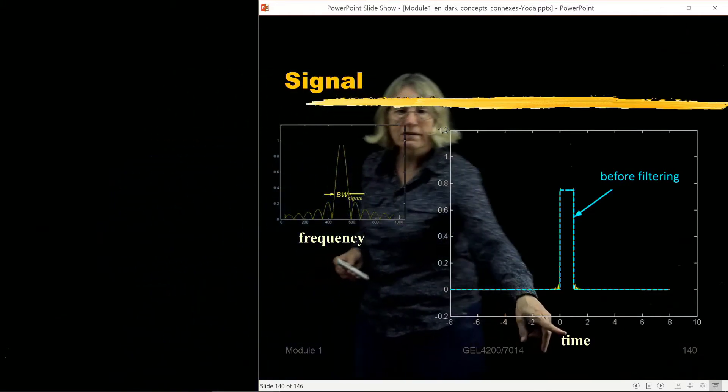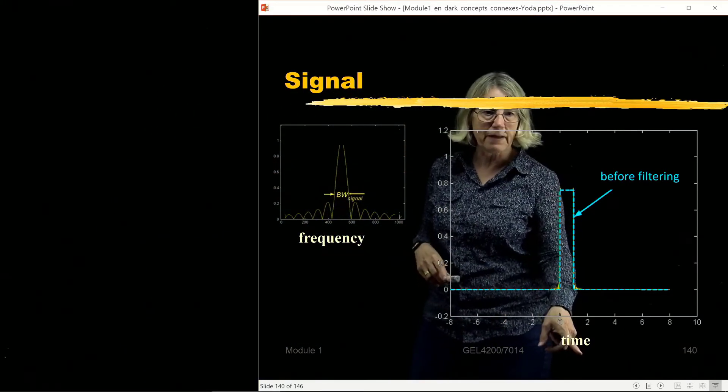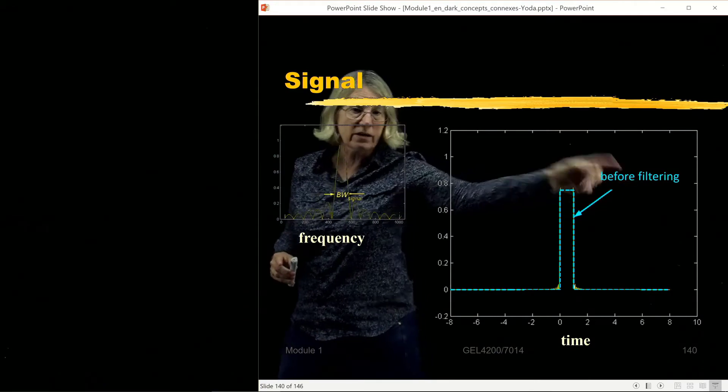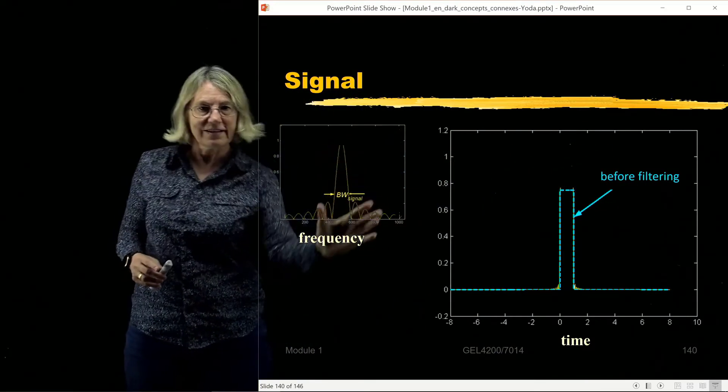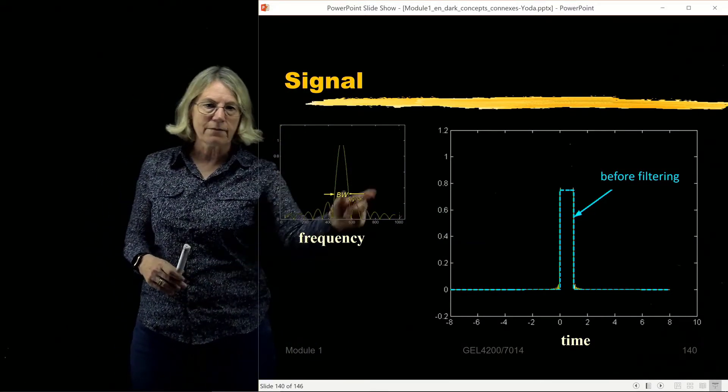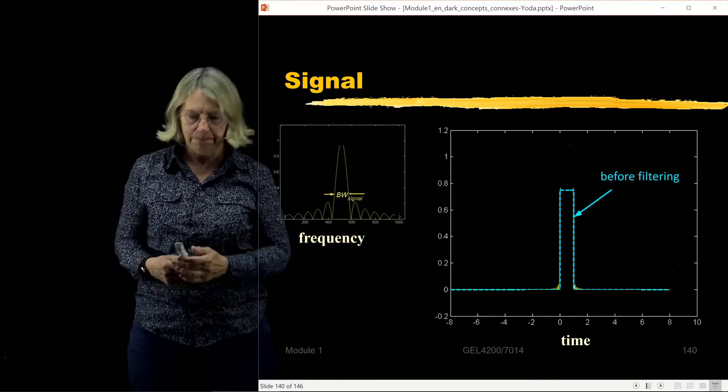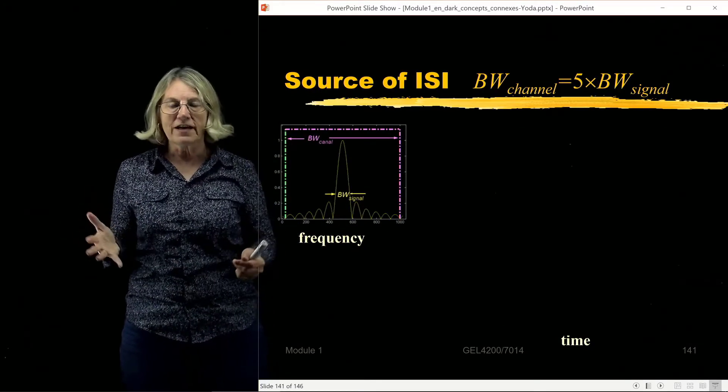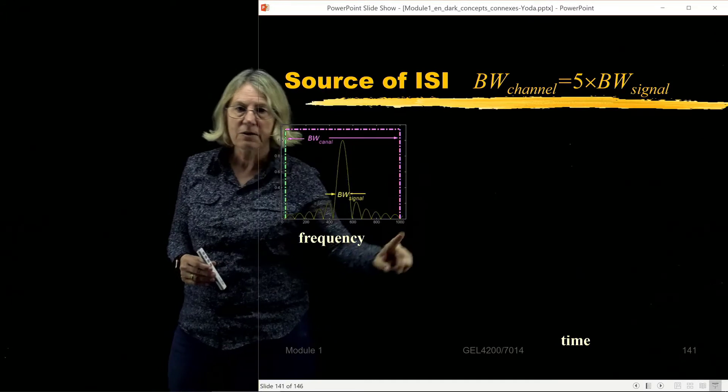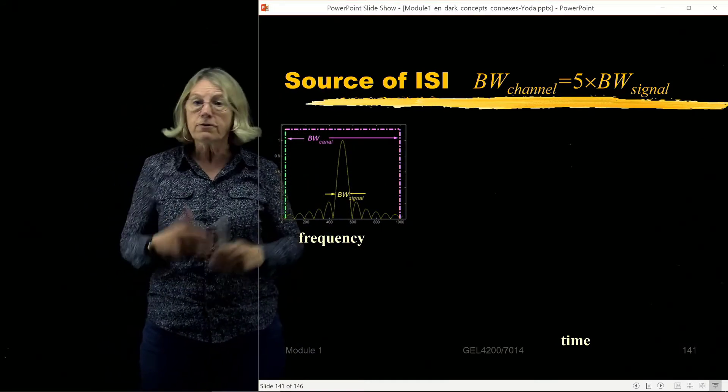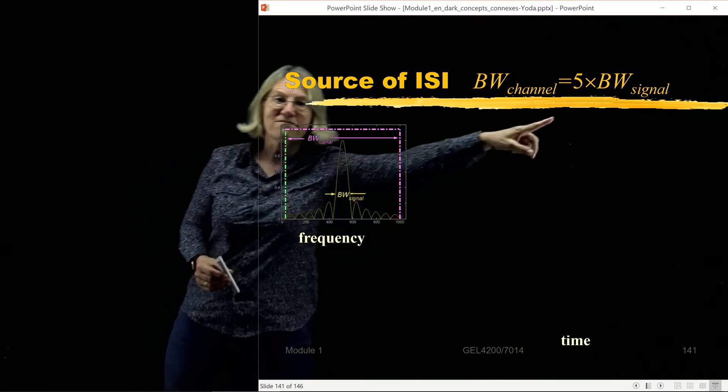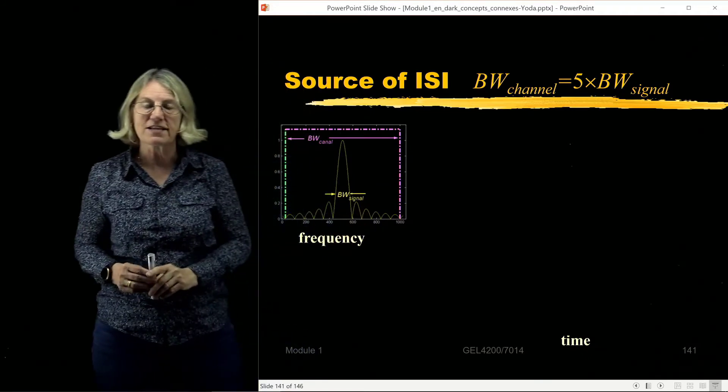I'd like to show you the impact of having very different bandwidths between the bandwidth of the channel and the bandwidth of the signal. I start with the signal. Here's the time domain on the right, the frequency domain on the left. In the time domain, I just have a nice rectangle. There's no filtering. This is before I put it through the channel, before I filter it at all. In the frequency domain, if I have a rectangle in the time domain, I have a sinc function in the frequency domain. I'm going to define the bandwidth as this main lobe.